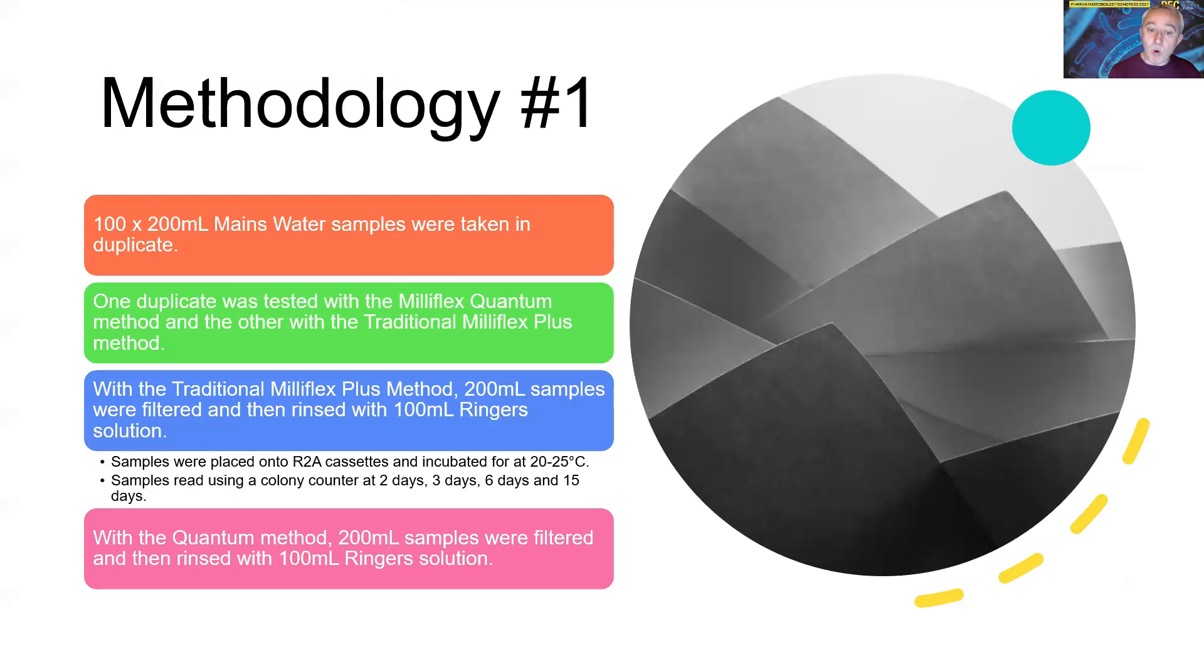First of all, we're going to have a look at what might be involved in comparing two methods. 100 samples were decided to be used as a reasonable number to draw some statistical inferences from. 400 milliliters was taken and divided between the two test systems. So both test systems saw a 200 ml filtration. One duplicate tested against the Milliflex quantum and one against the traditional testing method. After samples were filtered, the membranes were rinsed using Ringer solution, which is an isotonic solution.